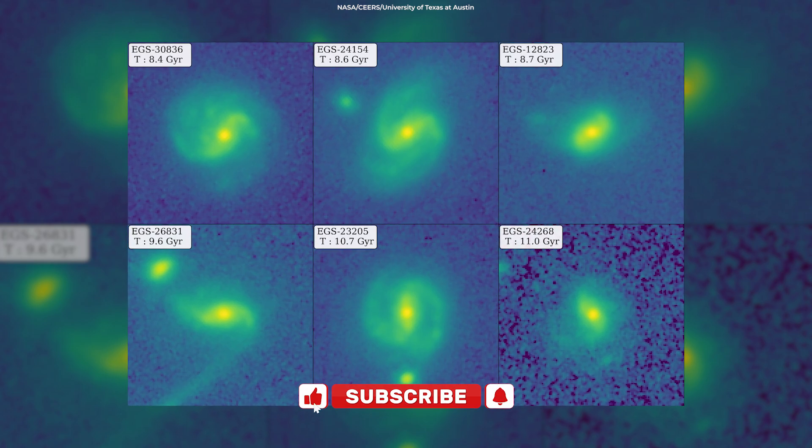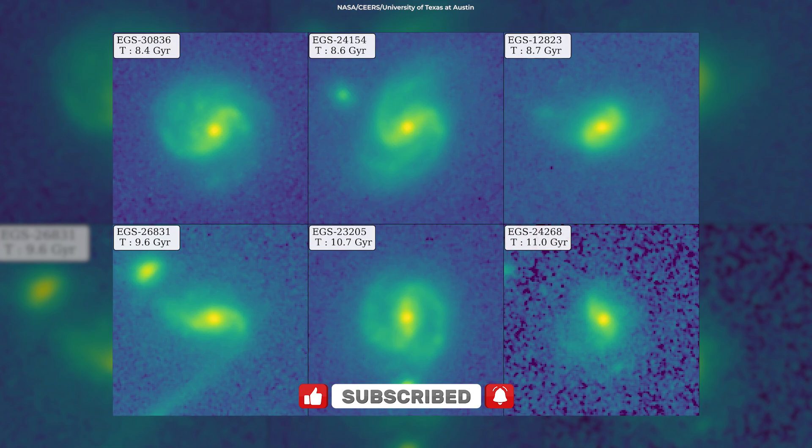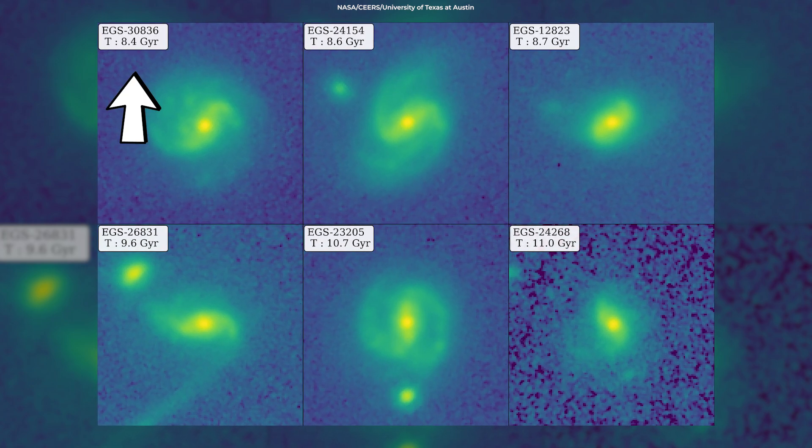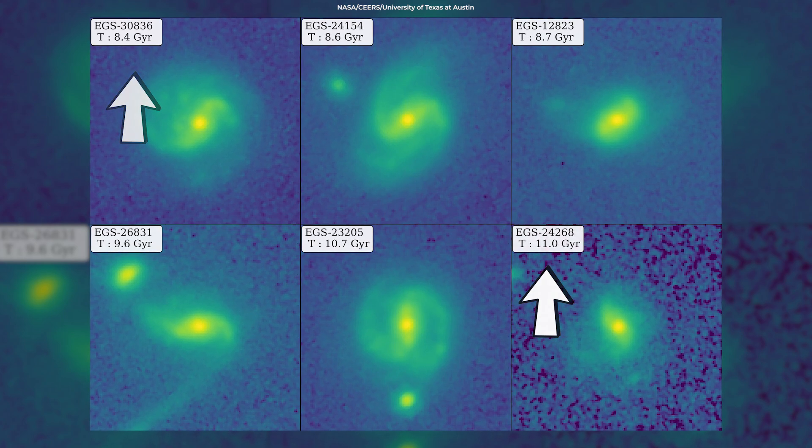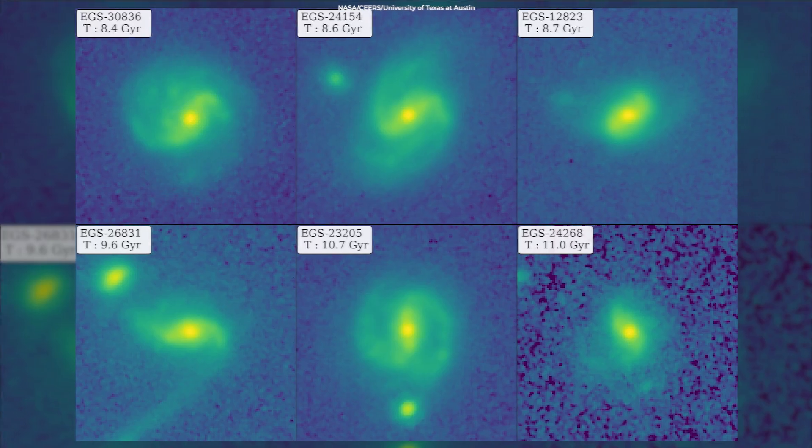This montage of images reveals six barred galaxies. The labels on the top right show the look-back time of each galaxy, ranging from 8.4 to 11 billion years ago, when the universe was a mere 40% to 20% of its present age.